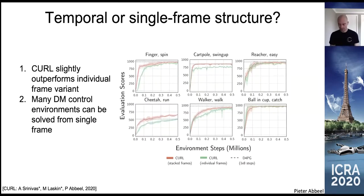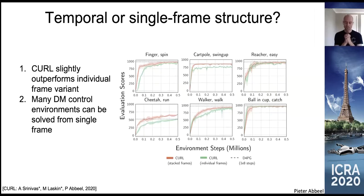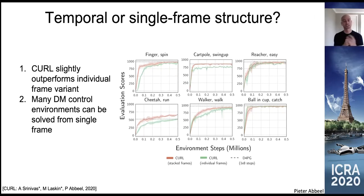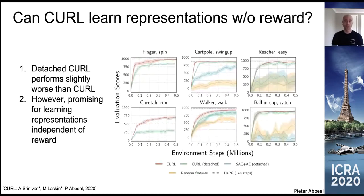Another question: since we feed stacked frames to capture velocity and angular rates, how much of the representation learning through the contrastive loss is temporal versus within a single image? We ran an experiment where in green, CURL only has access to a single frame for the contrastive loss, and in red, the full stack. Single-frame CURL does almost as well as multi-frame CURL, suggesting most representation learning is about extracting state information from a single image.